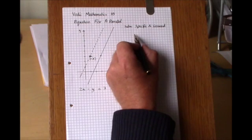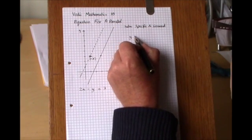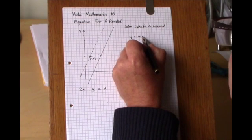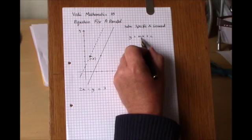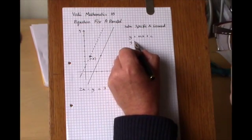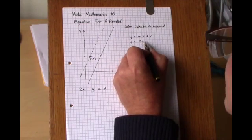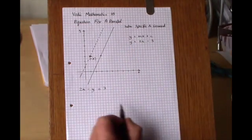Now let's have a look at the conventional method. In the conventional method we have the equation y equals mx plus c, and this equation here is y equals 2x, 2 being the gradient, minus 3. The value of c is minus 3 down here somewhere.